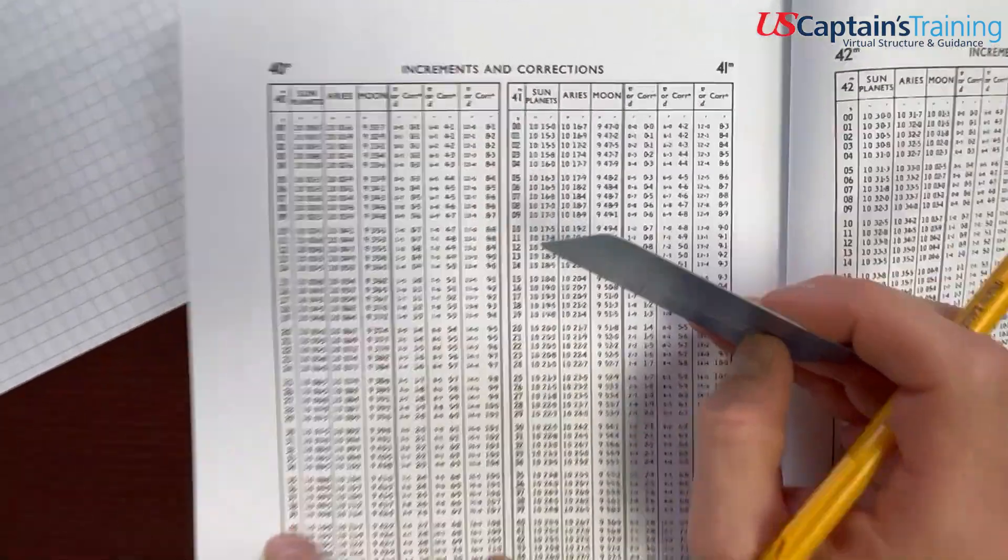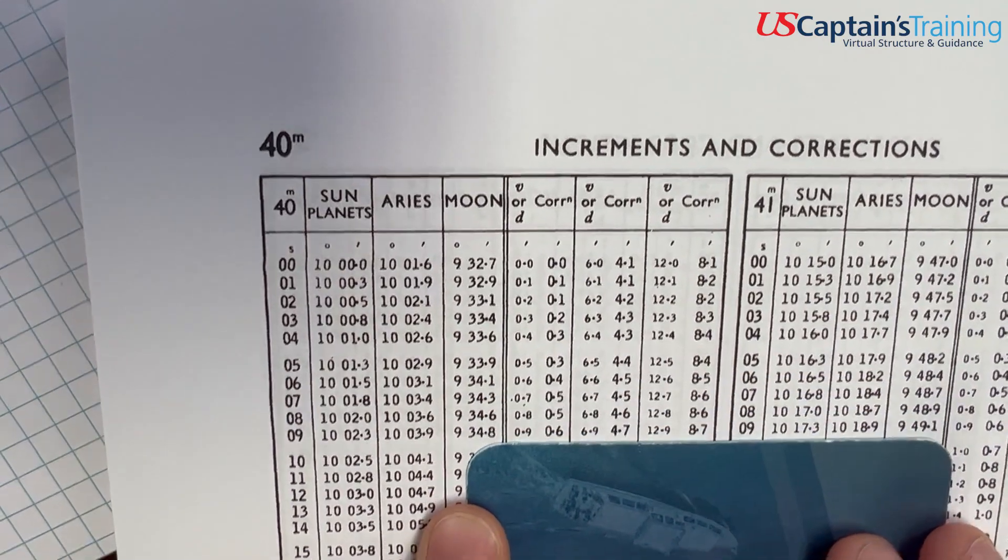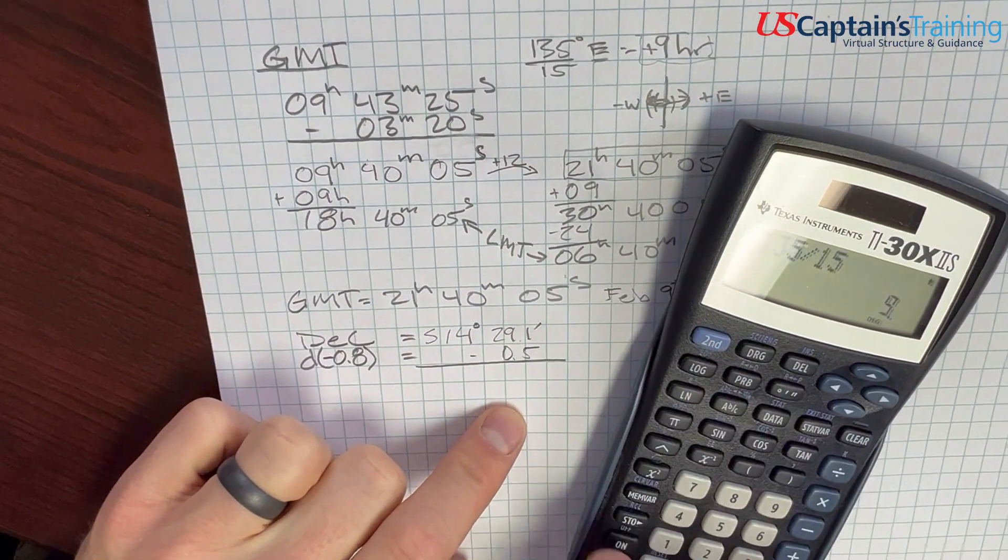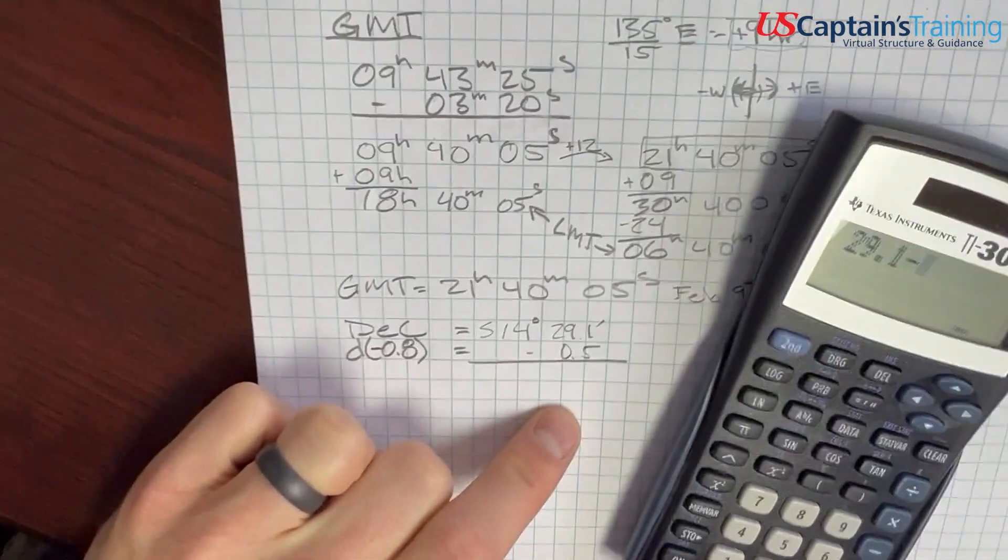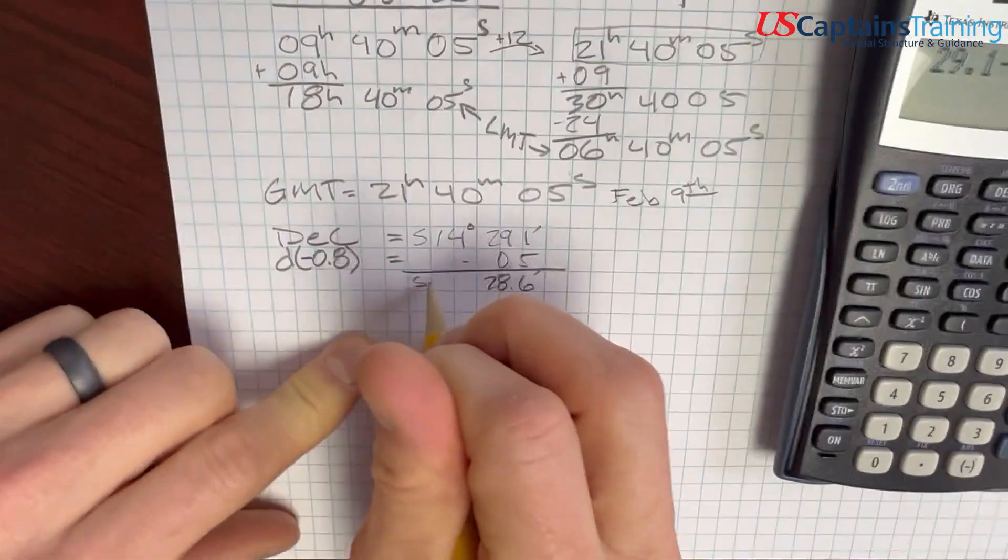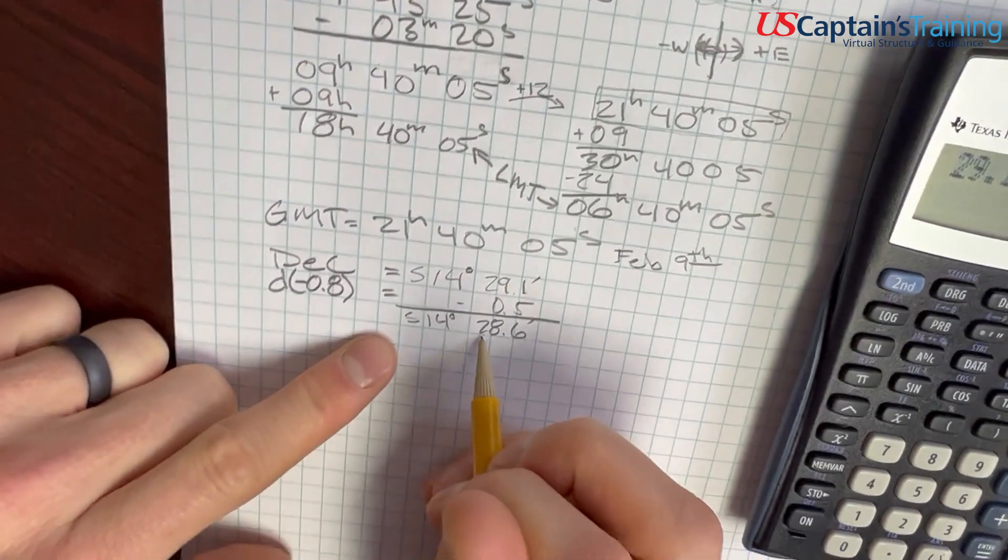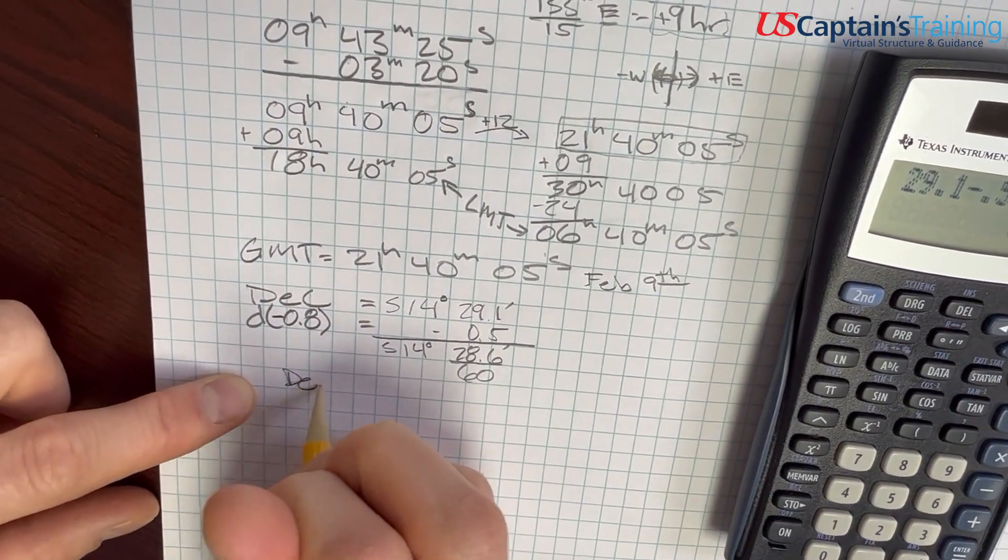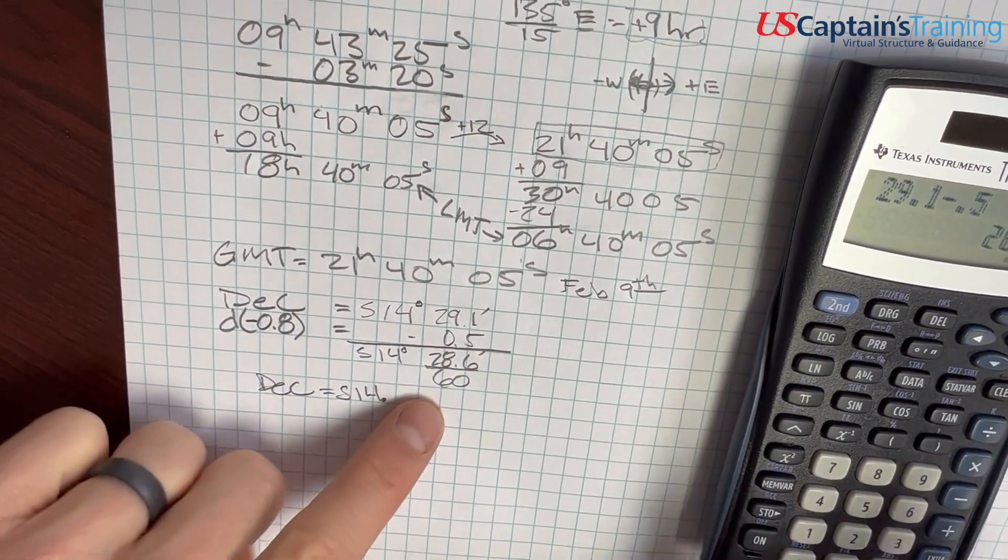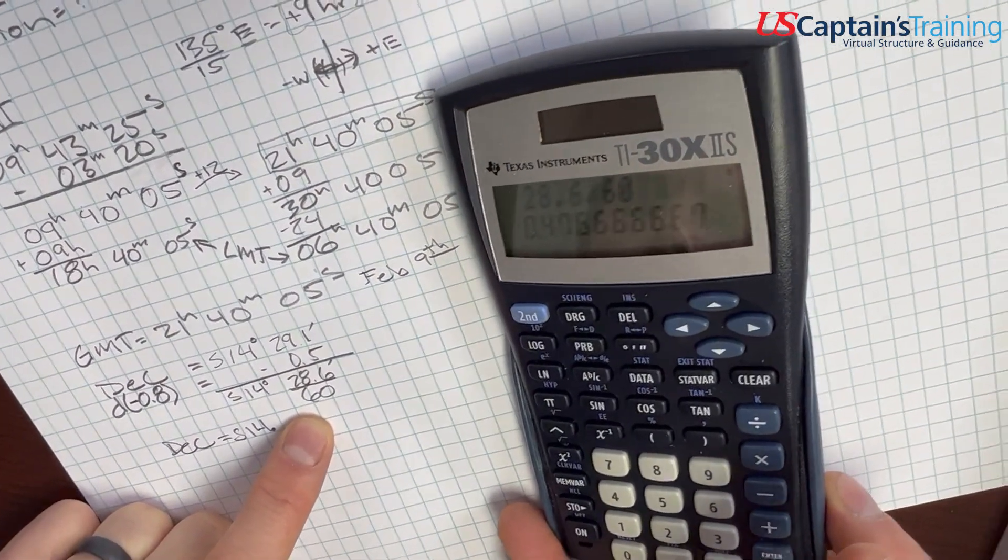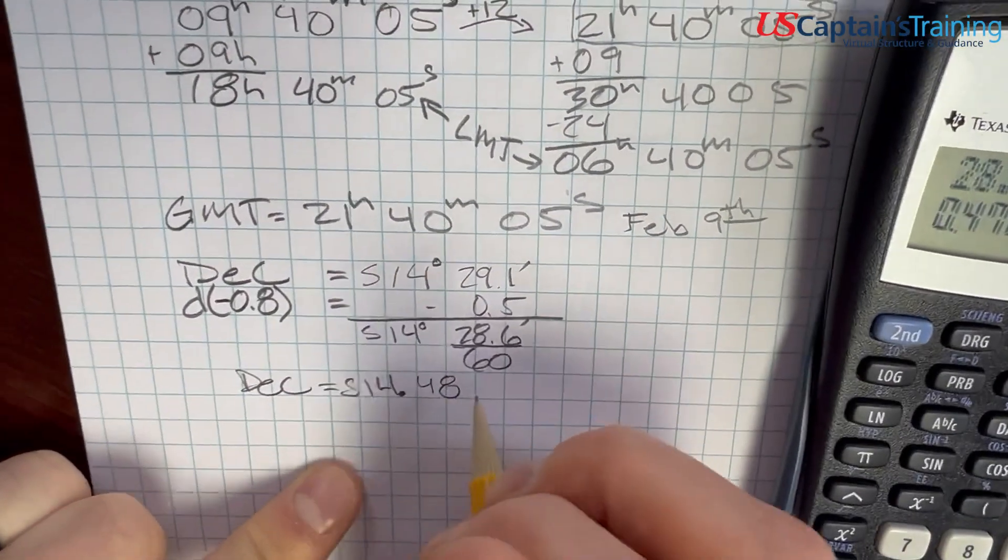Here we are for 40 minutes and D values. Our D value is 0.8. The correction is 0.5. And we are subtracting this. So let's subtract that. 29.1 minus 0.5 equals 28.6 minutes. So south 14 degrees 28.6 minutes. We need to take these minutes, divide them by 60, and turn them into degrees. So our declination is going to equal south 14 point, whatever this is. 28.6 divided by 60 equals 0.48. So south 14.48 degrees.